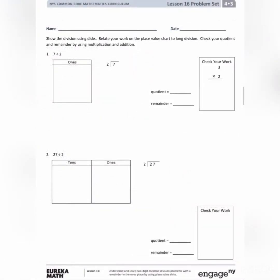Let's start with Lesson 16 Problem Set. The directions tell us to show the division using disks. Relate your work on the place value chart to long division. Check your quotient and remainder by using multiplication and addition.